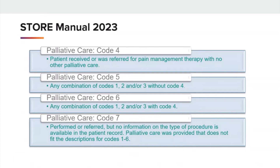Code 4 is when the patient received or was referred for pain management therapy with no other palliative care. Code 5 is any combination of 1, 2, and/or 3 without code 4. Code 6 is any combination of codes 1, 2, and/or 3 with code 4. And code 7 is performed or referred, but no information on the type of procedure is available in the patient record, or the palliative care was provided that does not fit the descriptions of the other codes.